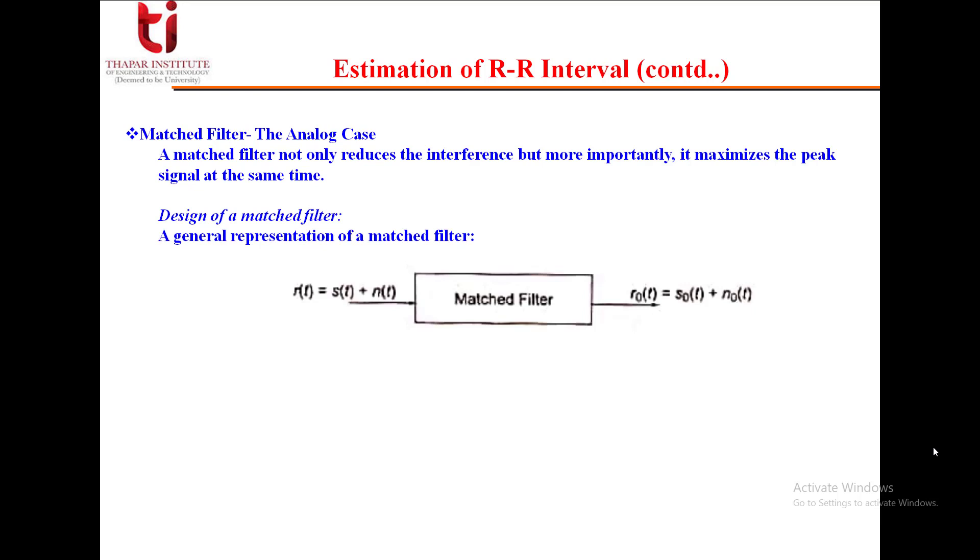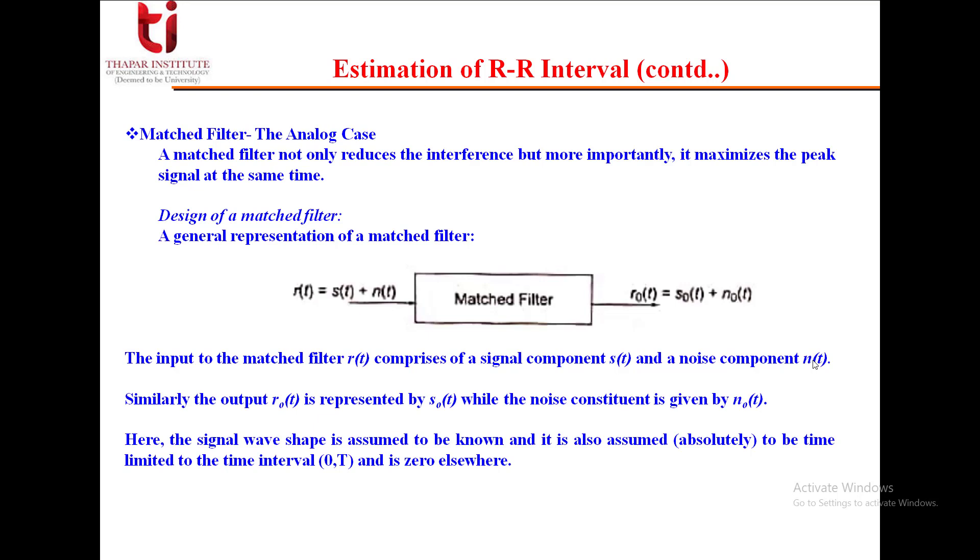How do we design the matched filter? A general representation of a matched filter: the input signal R(T) is the sum of a signal component S(T) and a noise component N(T). We are passing that to the matched filter and getting output as R0(T), the filtered signal corresponding to signal and noise components. The signal wave shape is assumed to be known and absolutely time limited within the time interval 0 to T, and otherwise it is 0. The power spectral density of this additive input noise is also known.